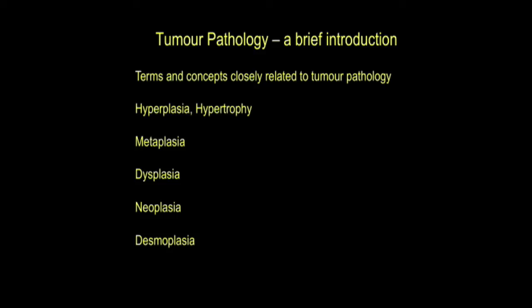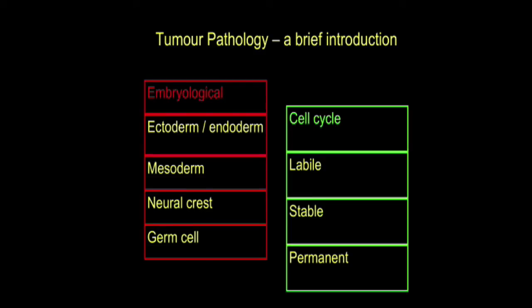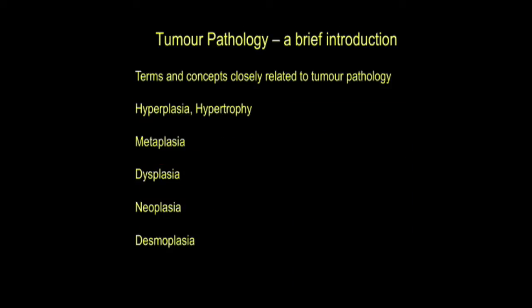Let's introduce some other terms and concepts closely related to tumour pathology. First, contrasting hyperplasia and hypertrophy: hyperplasia means an increase in tissue or organ size due to an increase in cell number, whereas hypertrophy means an increase in tissue or organ size due to an increase in cell size but not cell number. This ties in nicely with the labile and permanent cell groups — a labile cell group will undergo hyperplasia very easily, whereas a permanent cell group will undergo hypertrophy. For example, pumping iron at the gym gives you hypertrophic muscle.